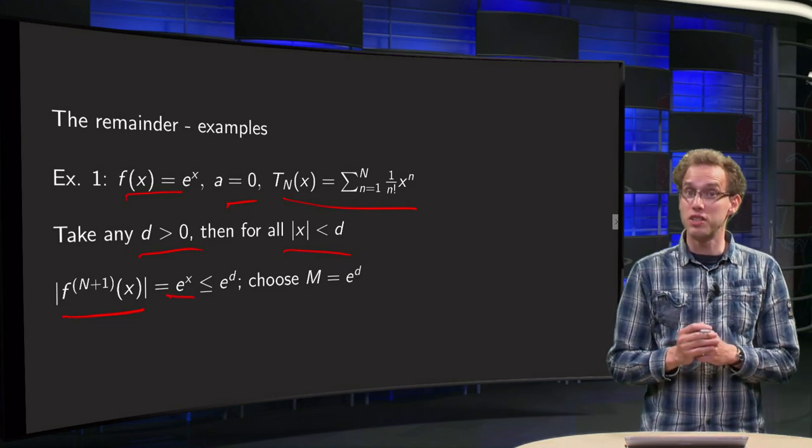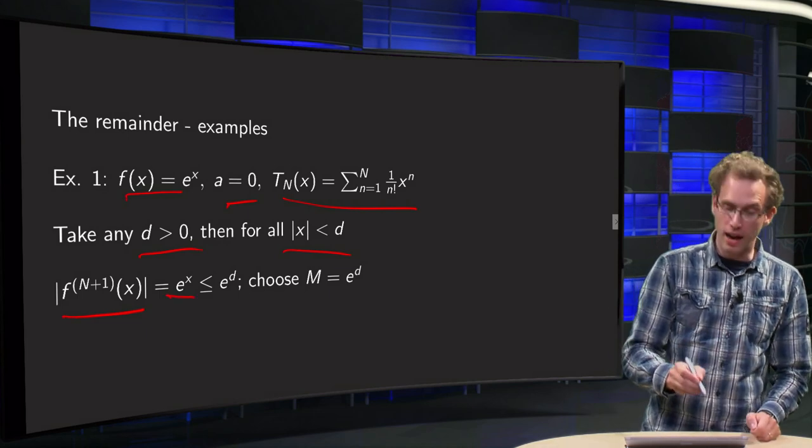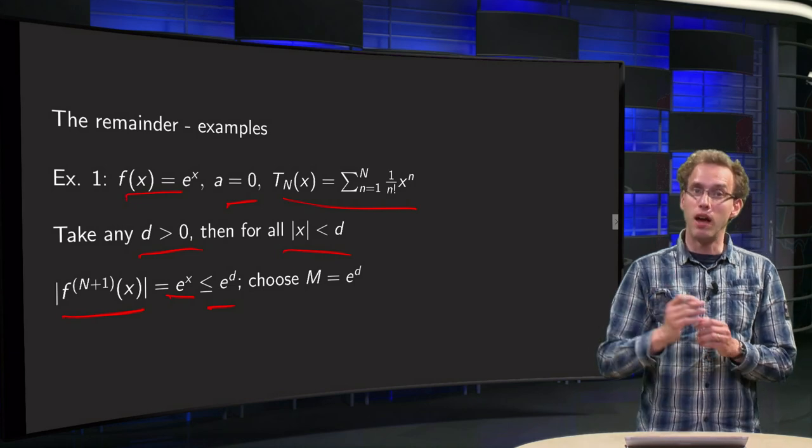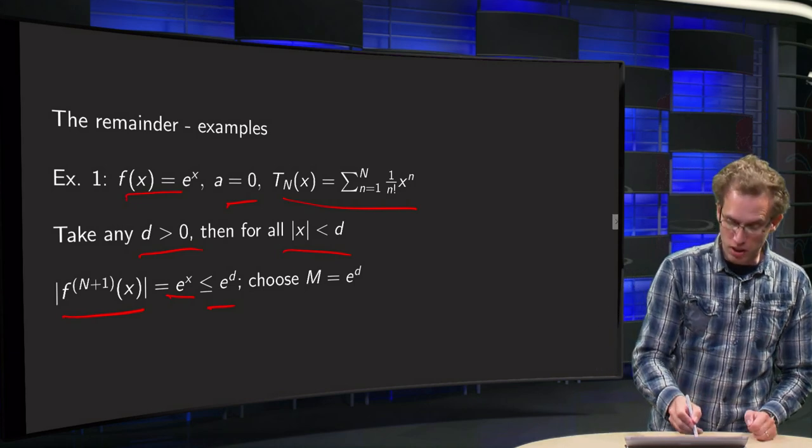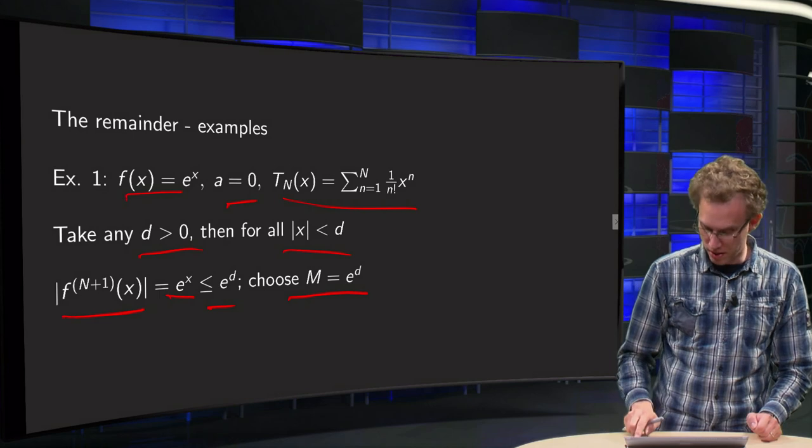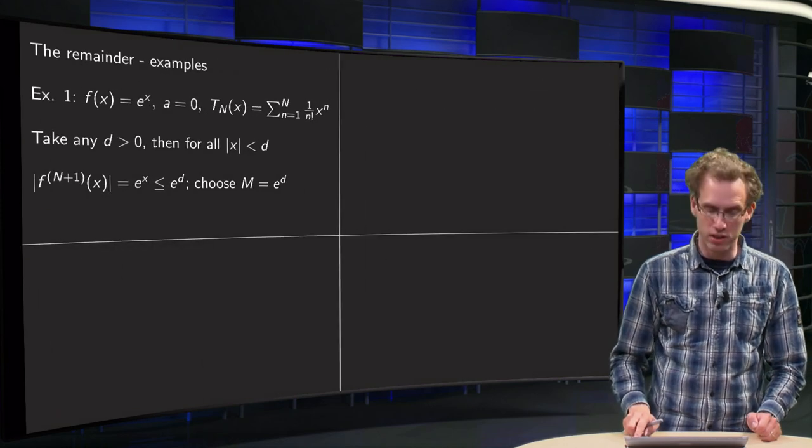So still e to the power x, which will be smaller than e to the power d, so we can choose as our M, e to the power d in our Taylor's inequality.